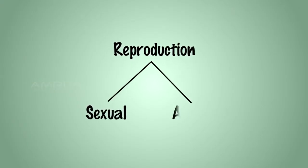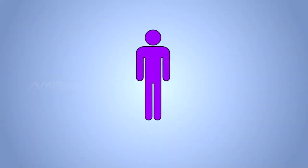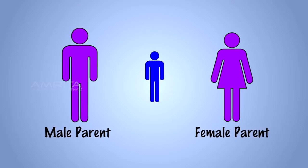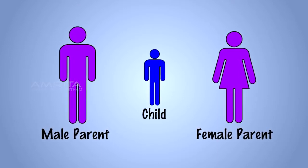There are two methods of reproduction, sexual and asexual reproduction. Sexual reproduction is the mode of reproduction in which the offspring arises from two parents from the opposite sexes.